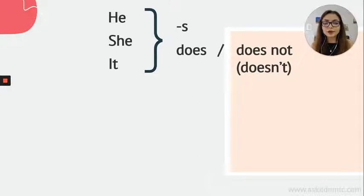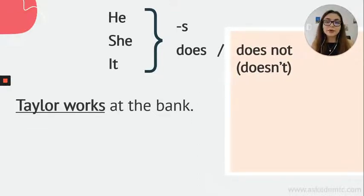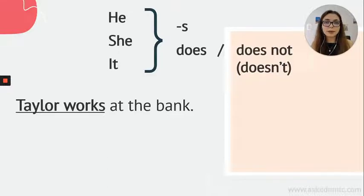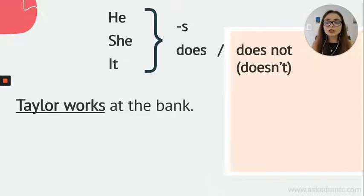Let's look at the positive one: Taylor works at the bank. We put an S to the verb 'work' — Taylor works at the bank. If the subject were I, you, we, or they, we could say 'I work,' 'you work,' 'they work at the bank.' But with Taylor — for he, she, or it — we say 'works.'